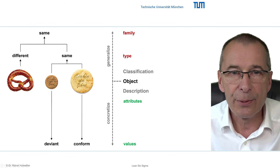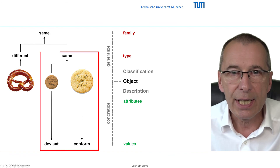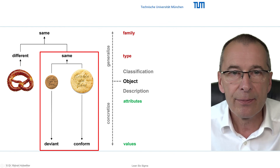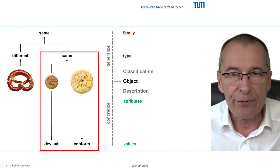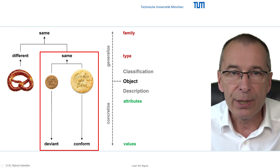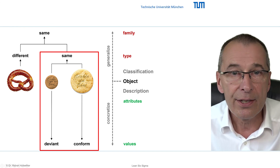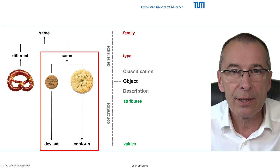The description allows us to discriminate and compare specific objects and related samples. In addition, target values and tolerance corridors can be determined to detect deviations from requirements. This leads us to the problems.